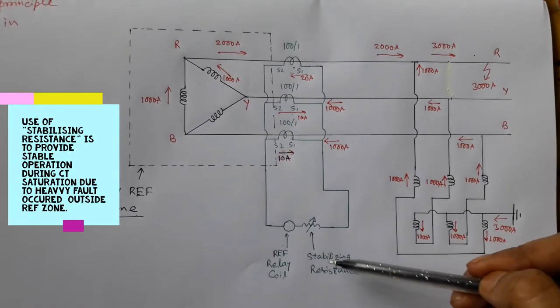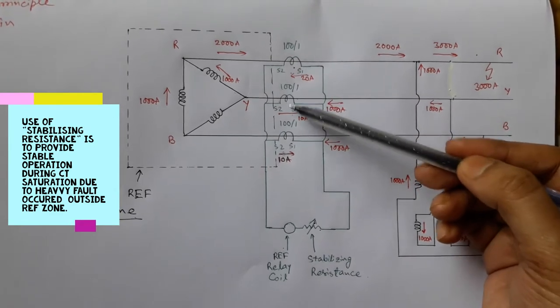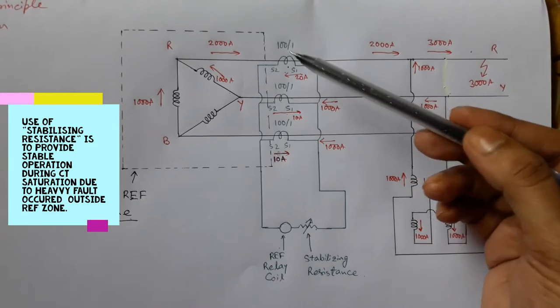In the case of high impedance restricted earth fault protection, all the CTs connected in the primary circuit should have the same CT ratio.